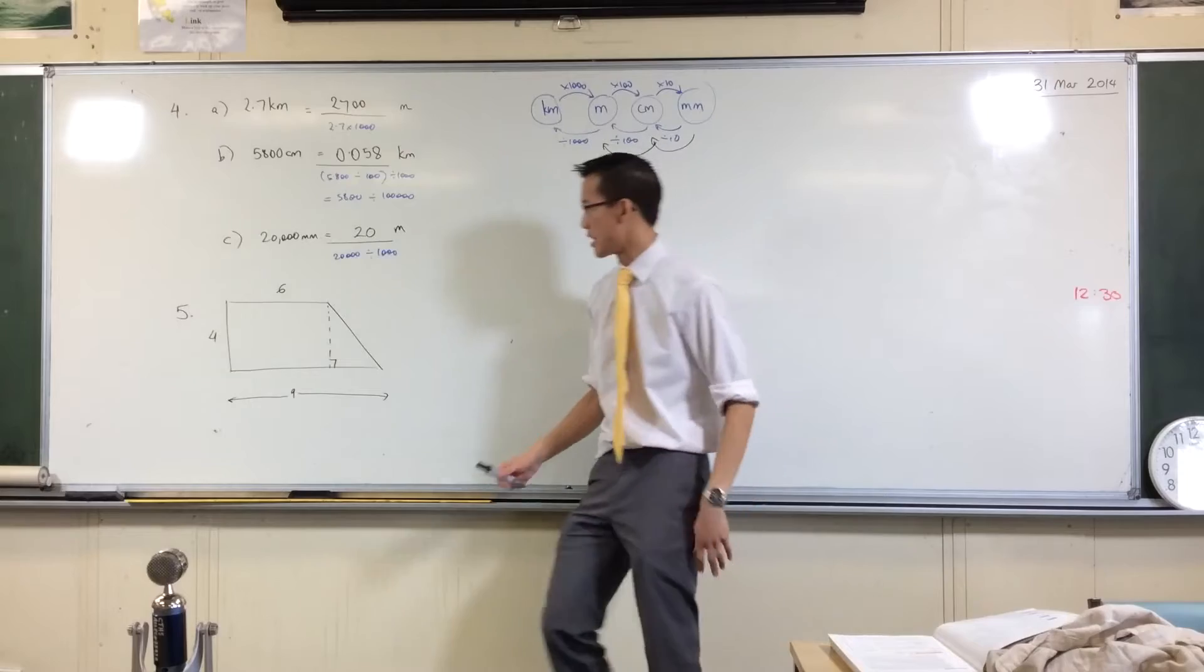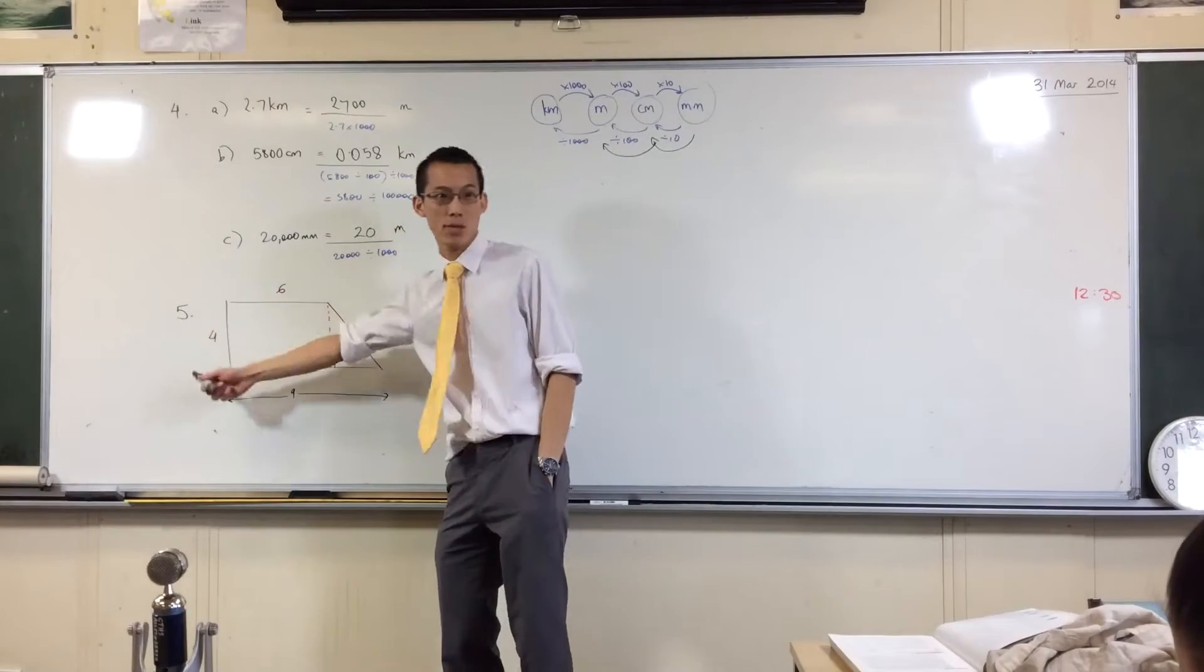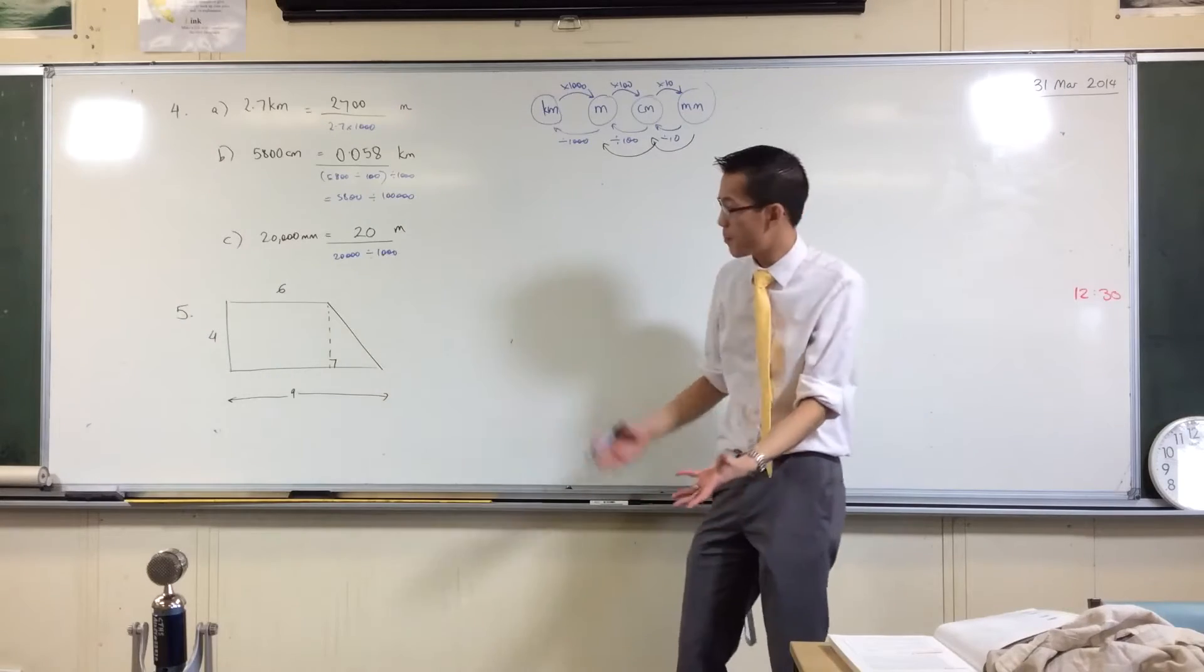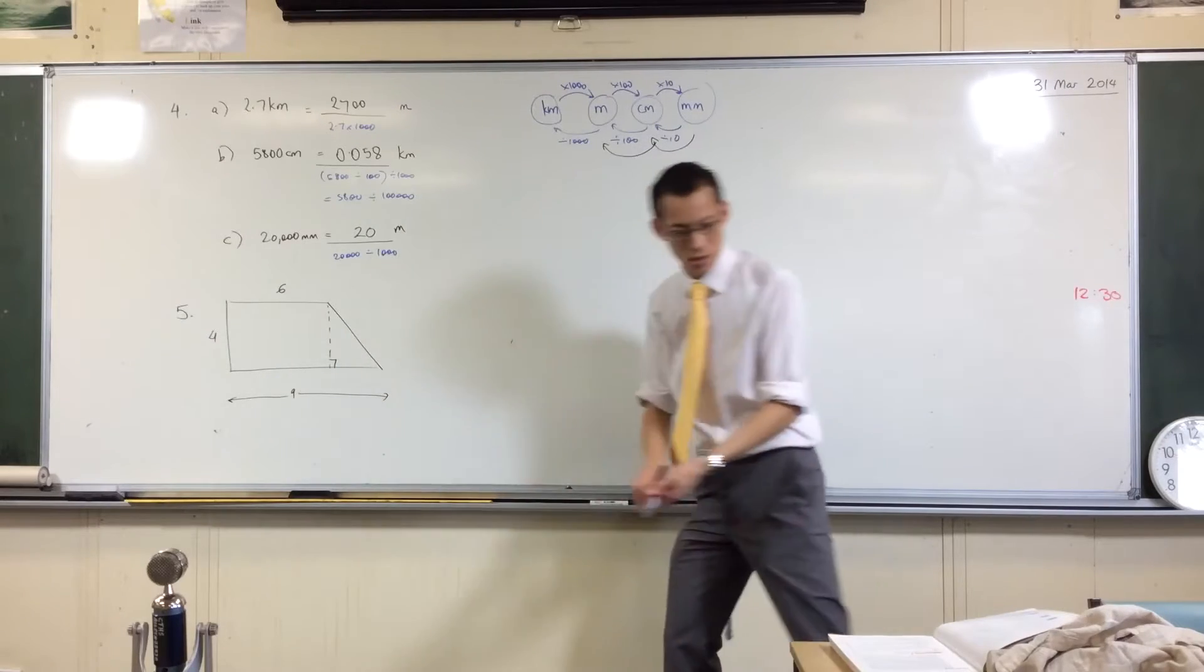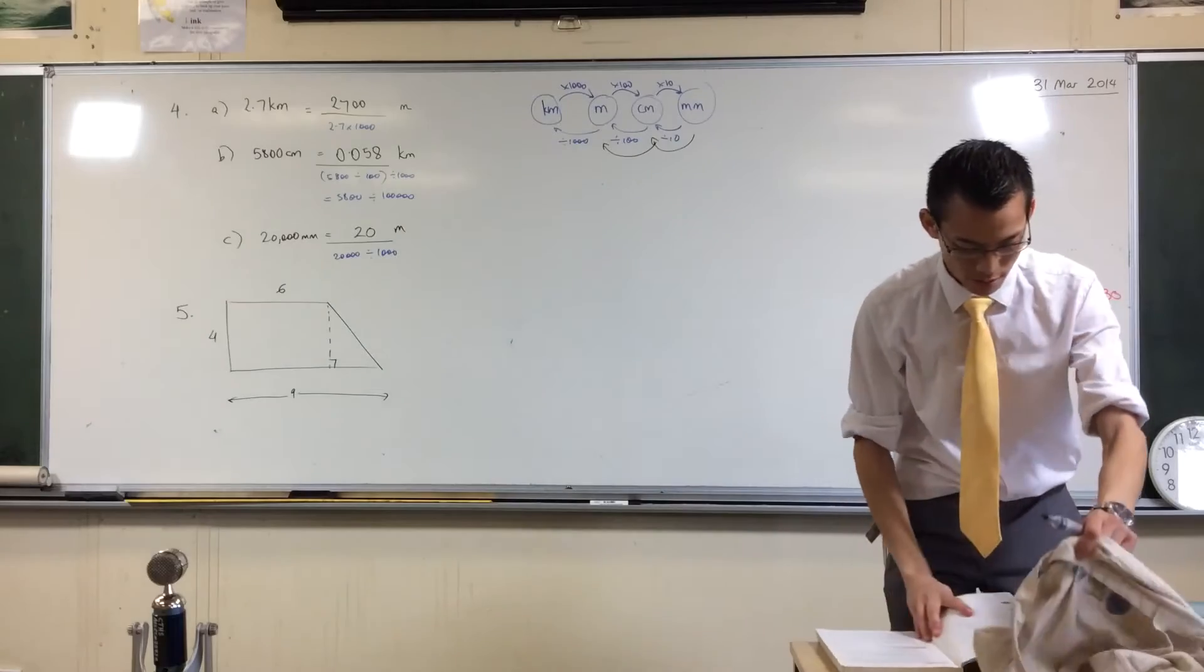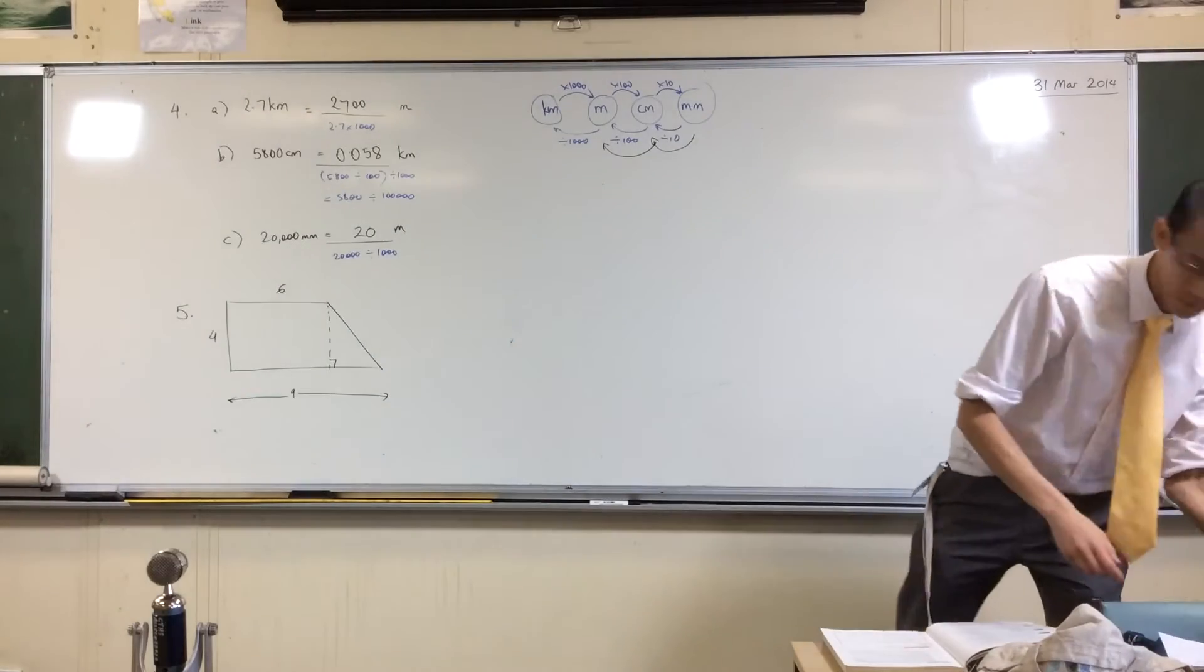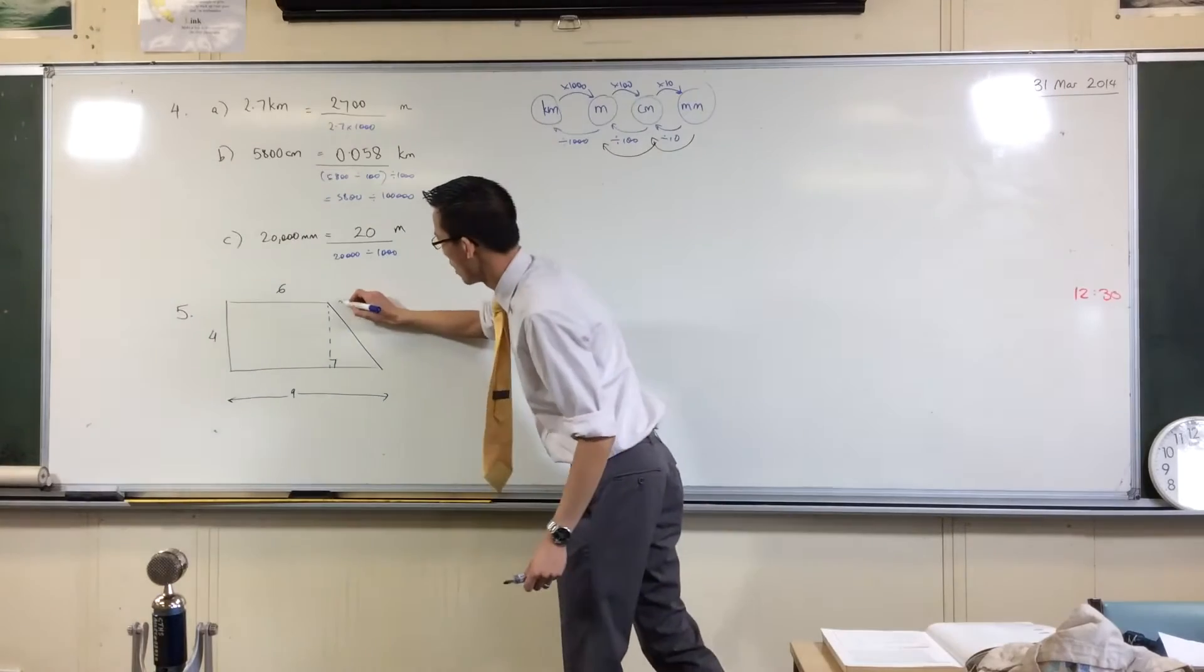Most of you got that you had to add six, four, and nine, because you're asked to find the perimeter, which means the whole way around that shape. But that leaves the question, what's this side?